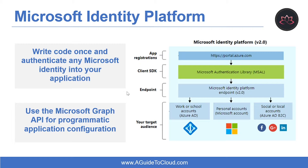Microsoft Identity Platform is an evolution of Azure Active Directory Developer Platform. It allows developers to build applications that sign in users, get tokens to call APIs such as Microsoft Graph, or APIs that developers have built. It consists of an authentication service, open source libraries, application registration and configuration, a developer portal and application API, full developer documentation, quick-start samples, code samples, tutorials, how-to guides, and other developer content.